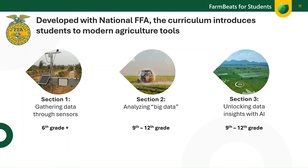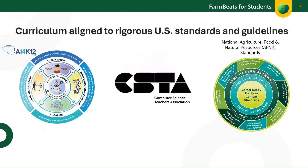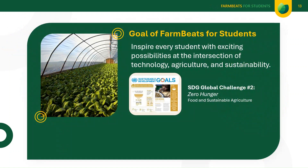The course also introduces Microsoft's responsible AI principles and presents discussions around some of the challenges raised by AI. The curriculum is aligned to science, math, and computer science standards, as well as intentionally designed to align with the AI for K-12 standards, ensuring a comprehensive and age-appropriate introduction to AI concepts. Additionally, FarmBeats for Students is aligned with the ANFR career-ready content standards, preparing students for future opportunities in agriculture and technology sectors. The program also contributes to the UN Sustainability Goal Number 2, Zero Hunger, by educating students on sustainable farming practices and the use of technology in agriculture.